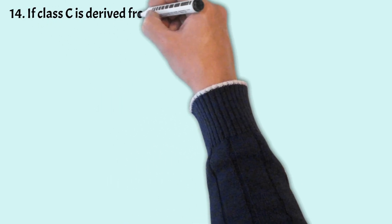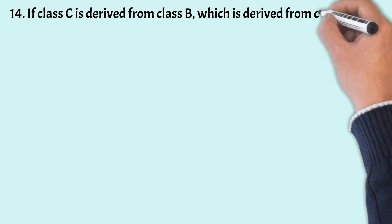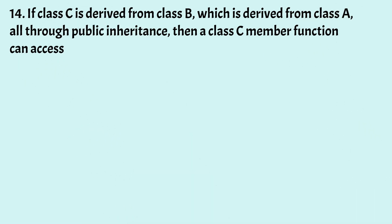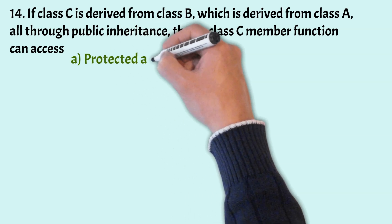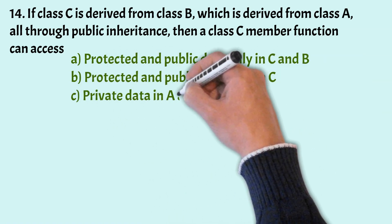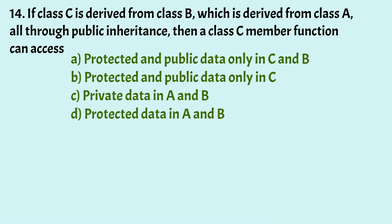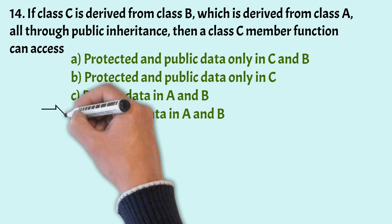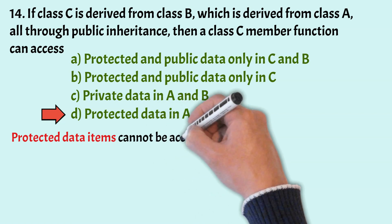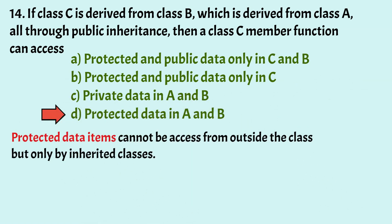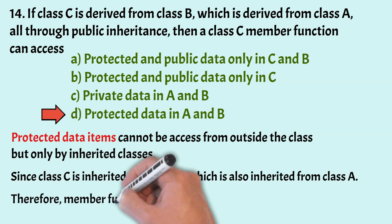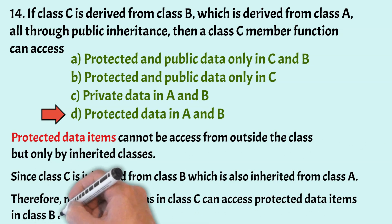If class C is derived from class B, which is derived from class A, all through public inheritance, then a class C member function can access which of the following? The correct answer is option D, that is protected data in A and B. Protected data items cannot be accessed from outside the class but only by inherited classes. Since class C is inherited from class B, which is also inherited from class A, the member functions in class C can access protected data items in class B and class A.